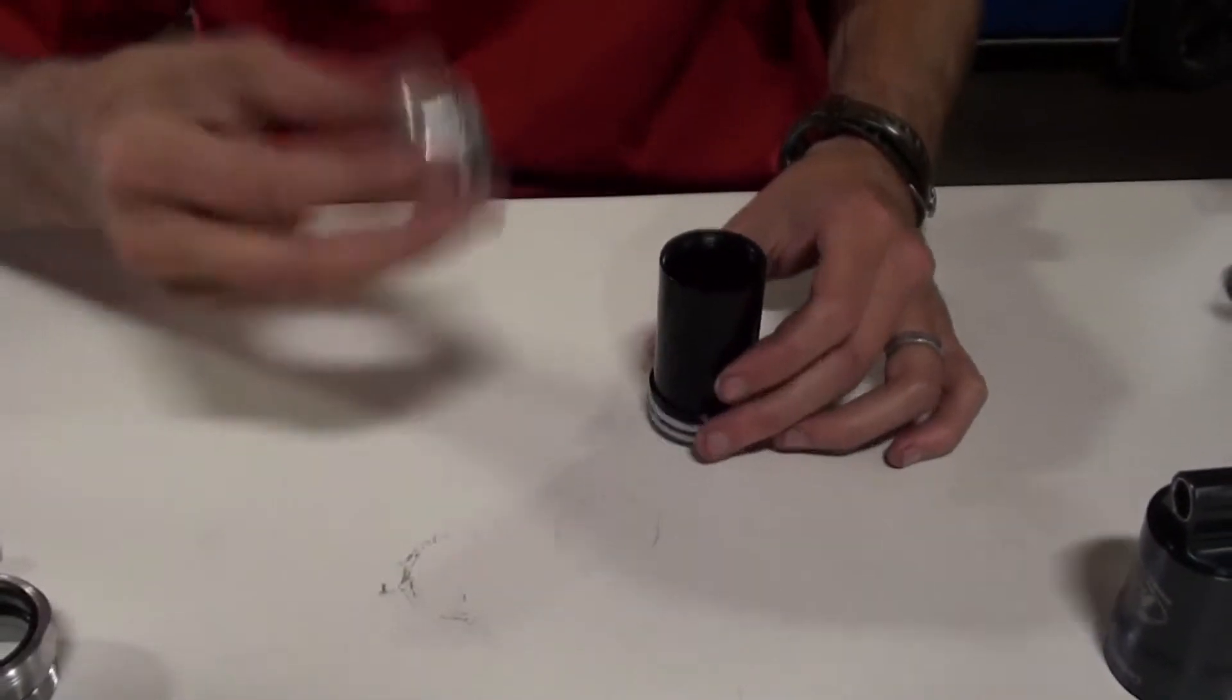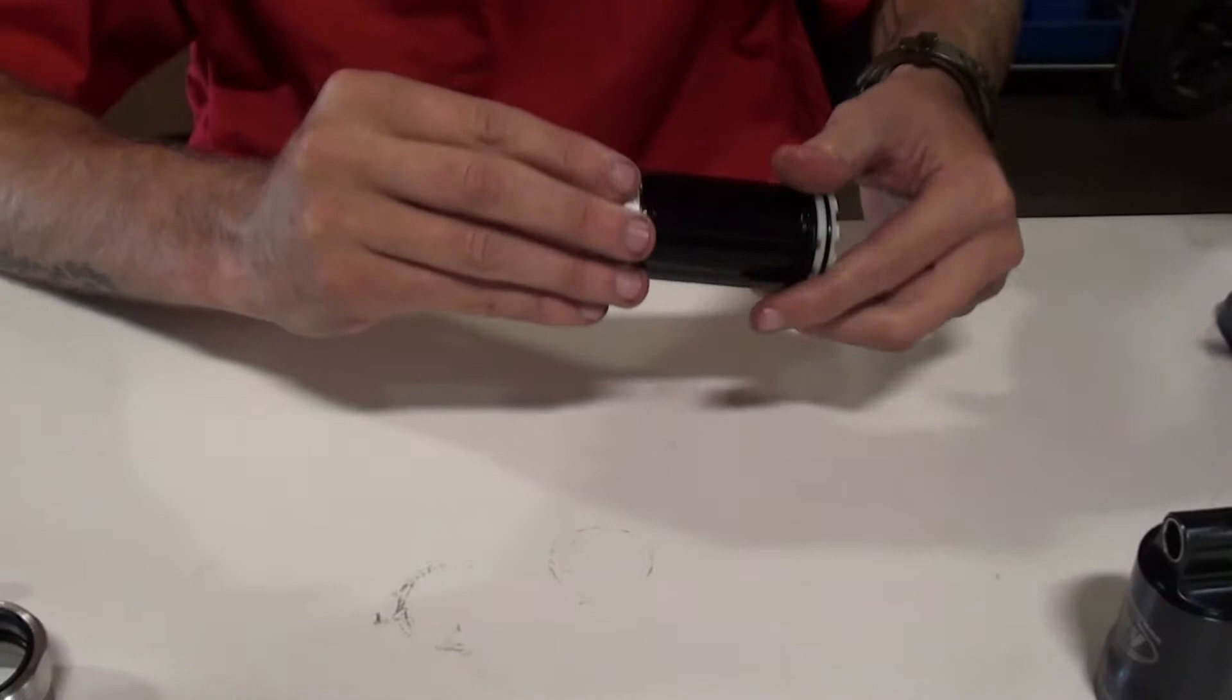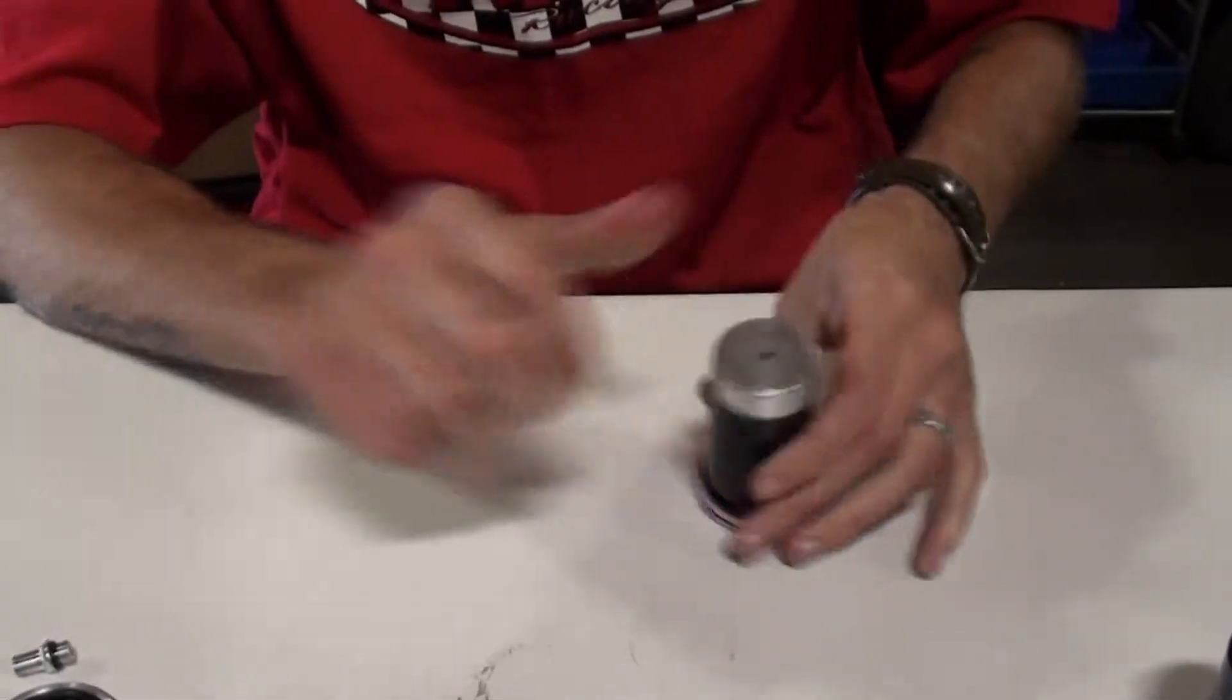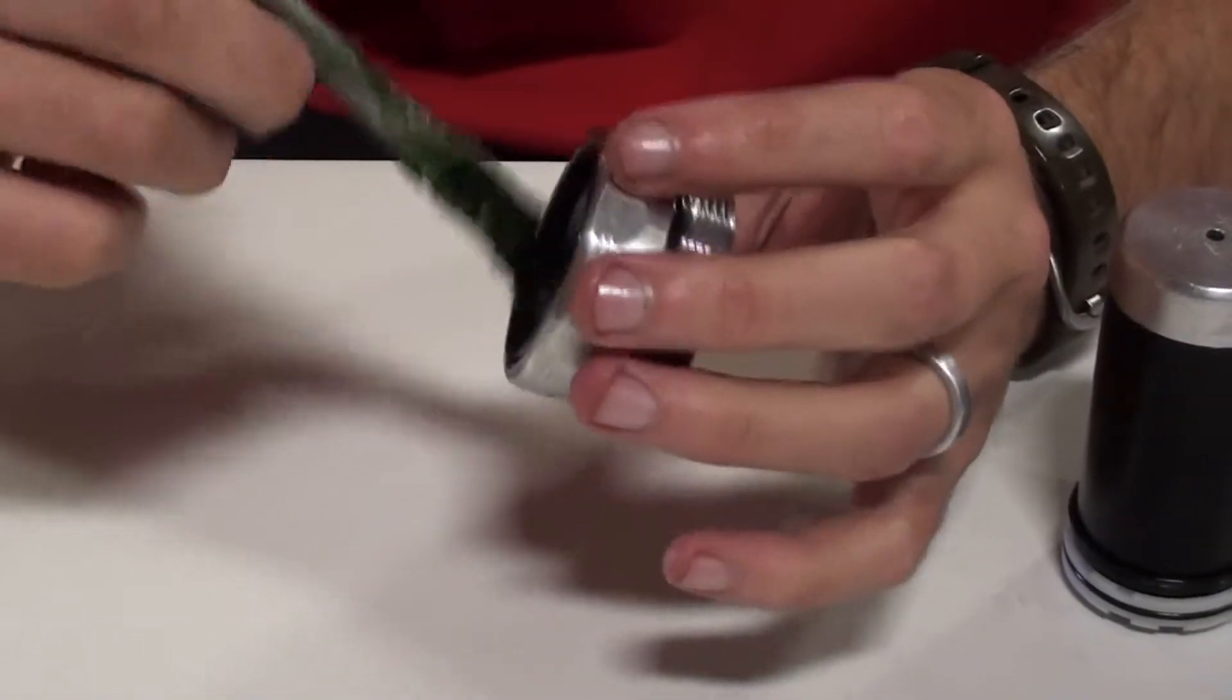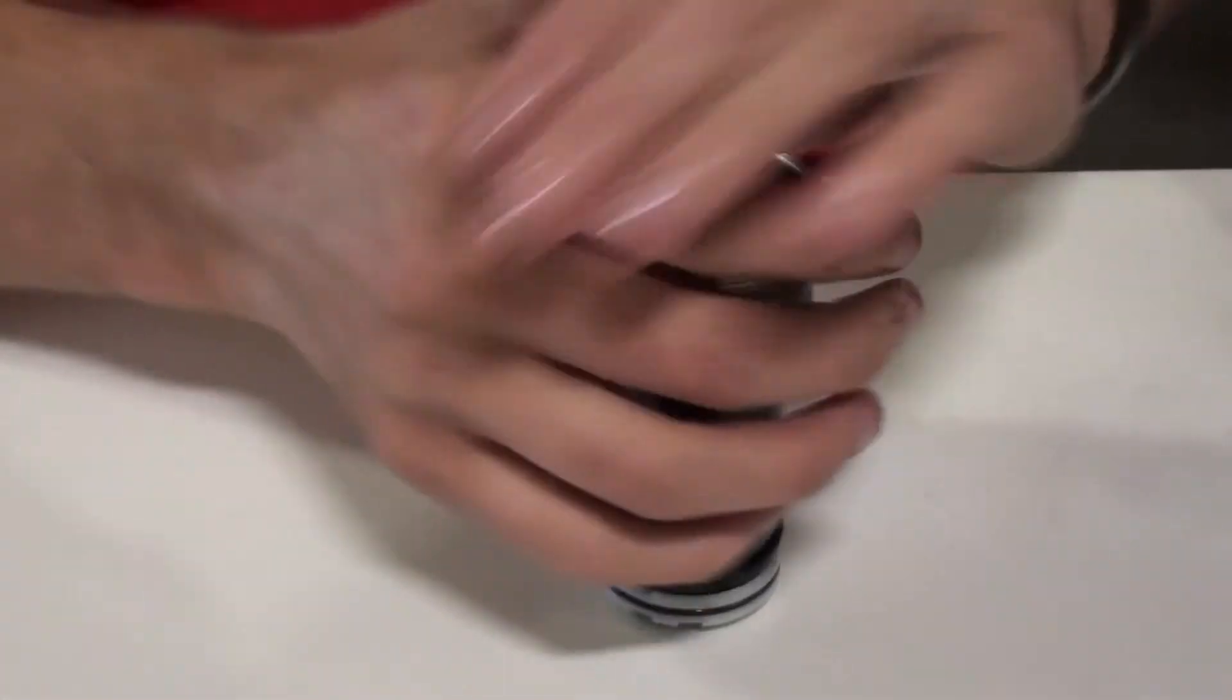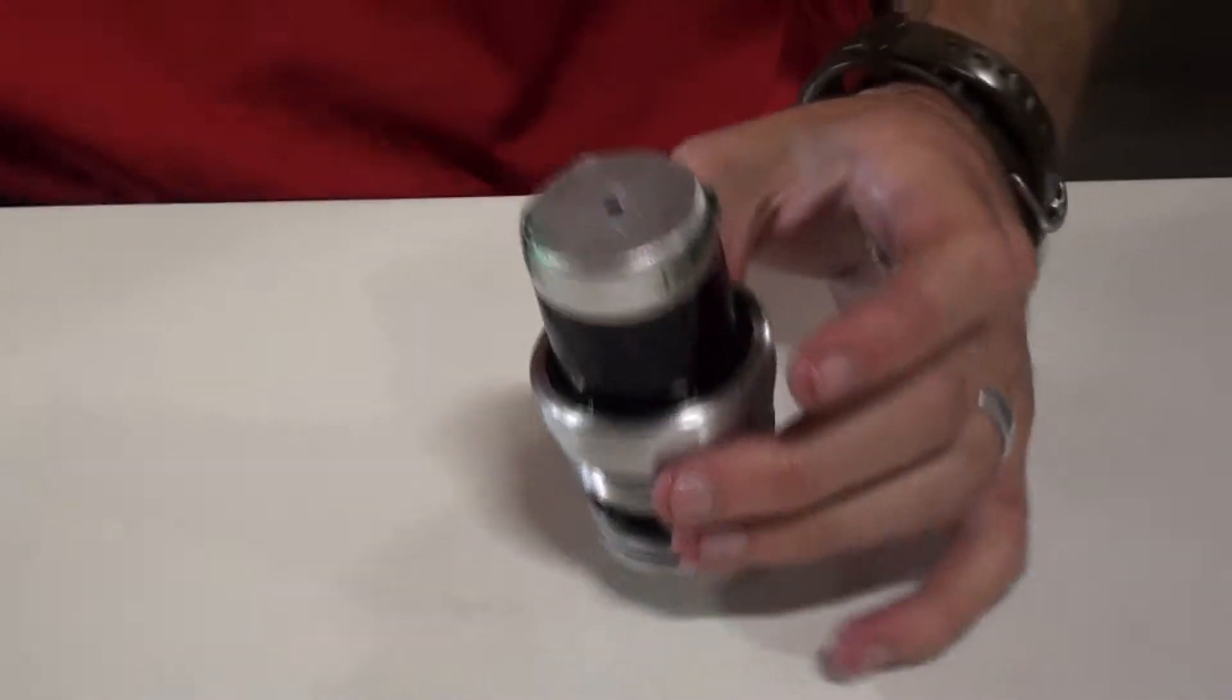Using a Rissi Racing bullet tool, screw it onto the shaft. Light coating of grease on the inside of your bearing. Slides easily over the bullet tool.